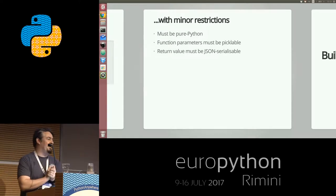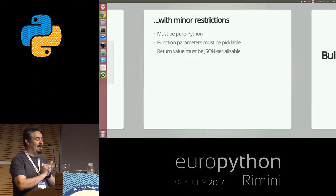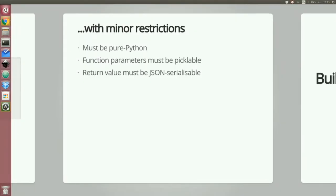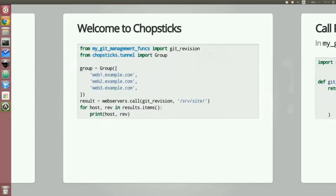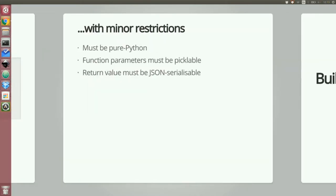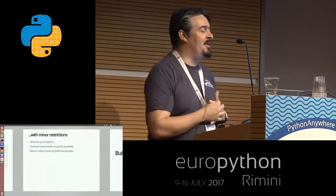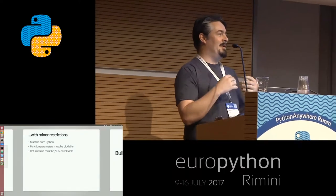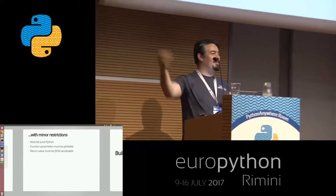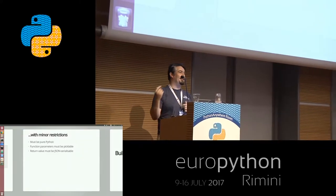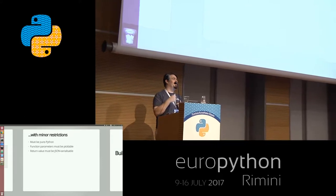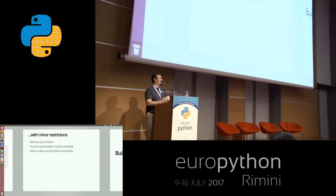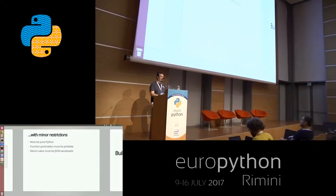There are some restrictions to the code that you can run on remote hosts: it has to be pure Python, the function parameters are pickled, and the return value must be JSON serializable. The reason for that was a security concern — maybe your server gets compromised, and you don't want your laptop running the orchestration functions to be compromised too. Pickle is not safe for that.